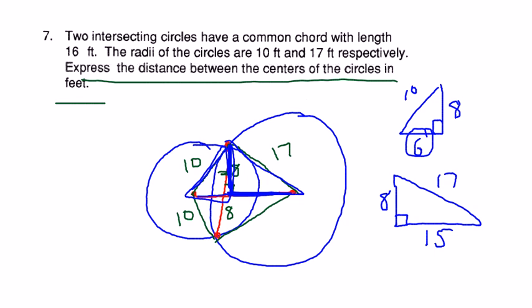So that means this length here is 6, and this length here is 15, and 6 plus 15 is 21, which is the answer to this problem.